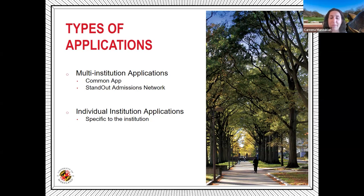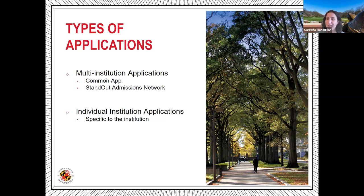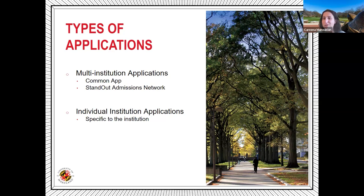The next type is the Individual Institution Application — applications only for one specific school, where you go on the school's website to find and submit the application. Georgetown is one major organization in the D.C./Maryland area that does this. I always recommend making a running list of all the colleges you like, marking down what platform they're on. It's a great way to dip your toe into the process.